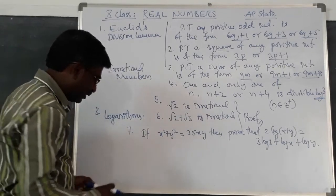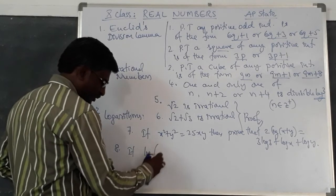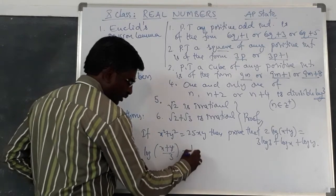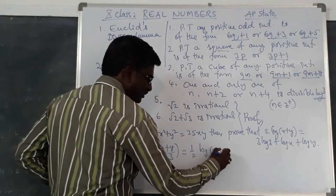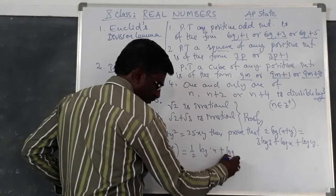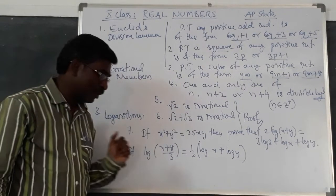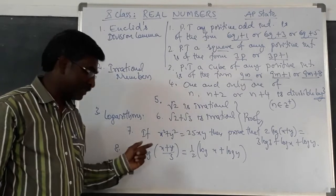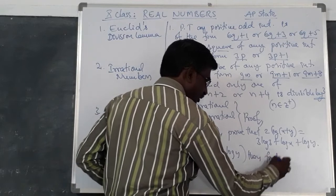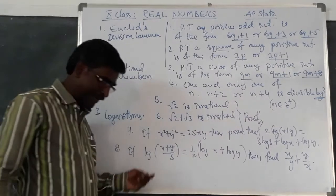Next, coming to the next one, if log of (x plus y) divided by 3 is equal to 1/2 times (log x plus log y), then we have to find the value of x/y plus y/x.